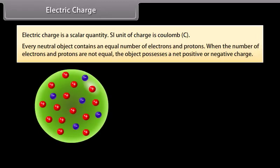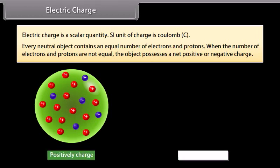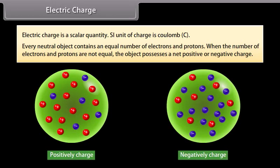Electric charge is a scalar quantity. The SI unit of charge is coulomb. Every neutral object contains an equal number of electrons and protons. When the number of electrons and protons are not equal, the object possesses a net positive or negative charge.